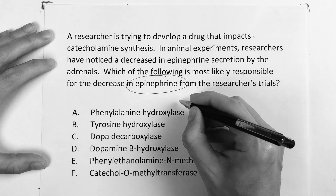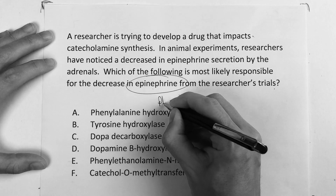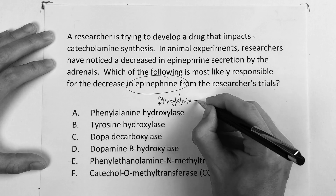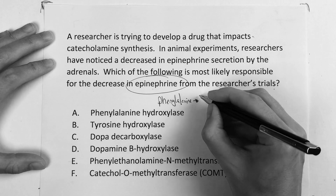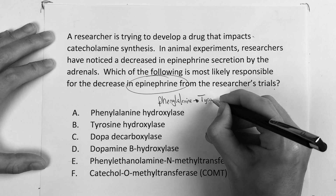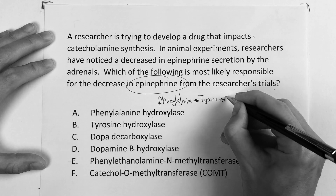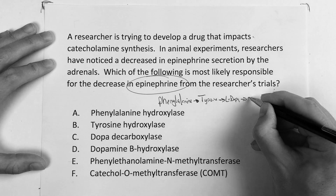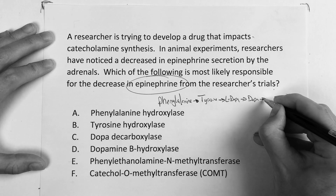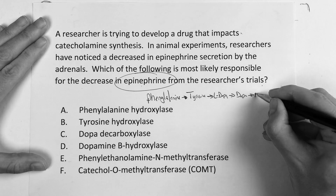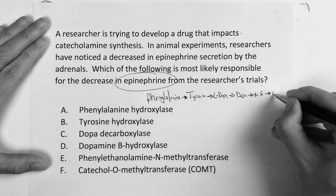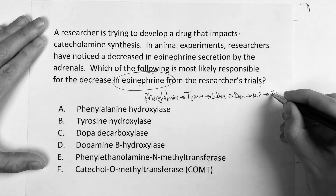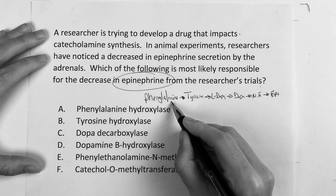So we always go back — and I'm telling you it works — phenylalanine. It's going to sound like a broken record, but there's a reason for it. Phenylalanine makes tyrosine, which makes L-DOPA, which makes dopamine, which makes norepinephrine, which makes epinephrine. Now, phenylalanine in the setting of what?